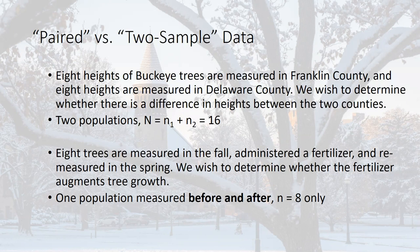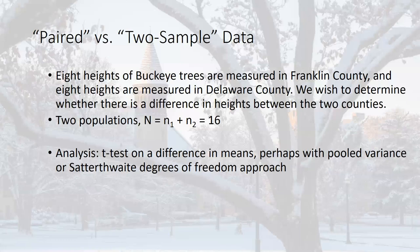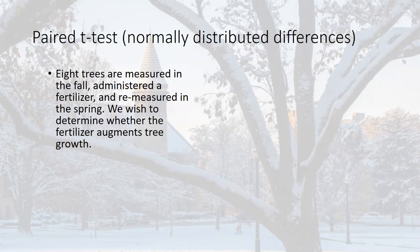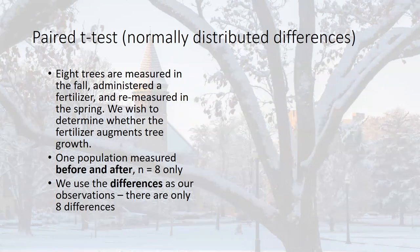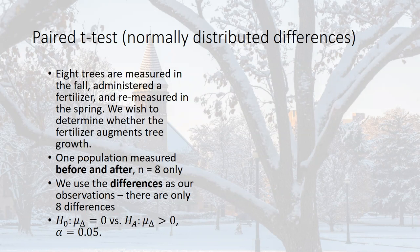Today we're focusing on the scenario where we're measuring something twice — before and after. For the two-sample case with two populations, we use a t-test with pooled variance or the Satterthwaite approach. But for the paired situation — before and after, or pre-treatment and post-treatment — we have eight observations, and what we use as our observations are the differences. We test the null hypothesis that the mean difference, delta, equals zero versus the alternative that the mean difference is greater than zero. The null is not about individual heights, but whether the change in height has increased after fertilizer.